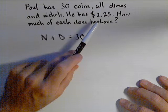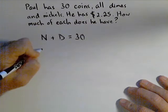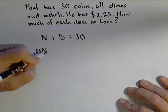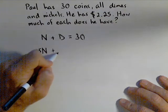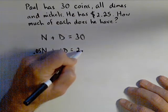Now we're also going to have a value equation, because we know it's $2.25. So the number of nickels times the value of a nickel, 0.05, will give us the total amount in nickels. And similarly with dimes, 0.1 times D has to equal our 2.25.